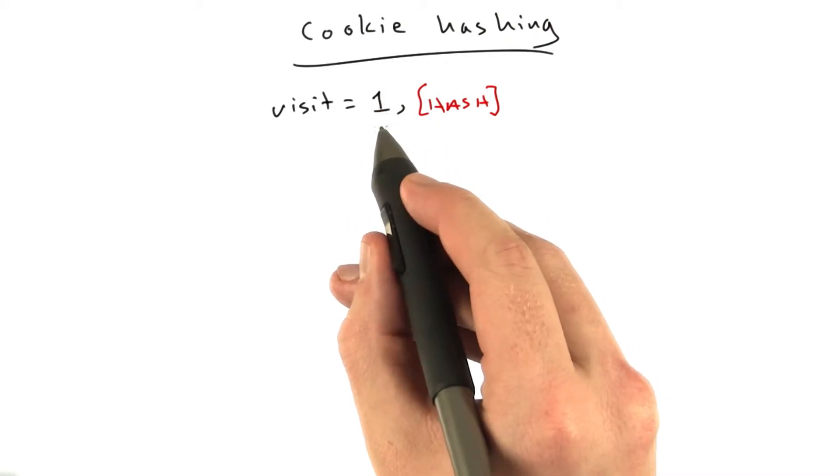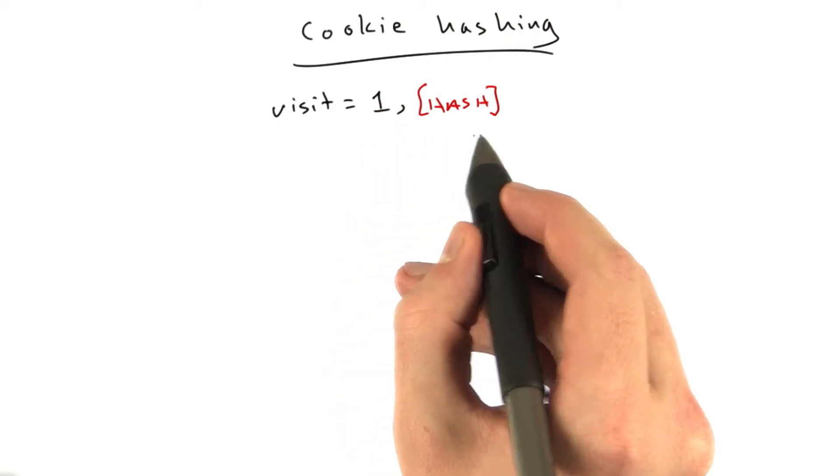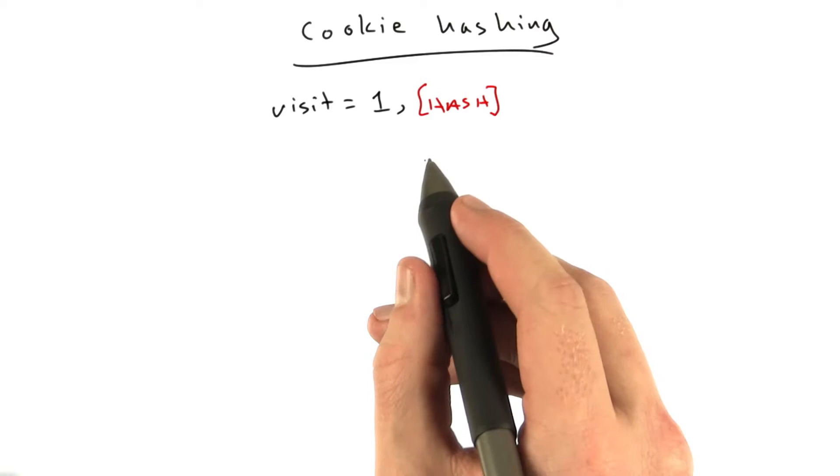You can just change the cookie value to whatever you want, run MD5 on it, append that, and now you forge the cookie. So, how do we solve this problem?